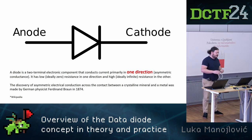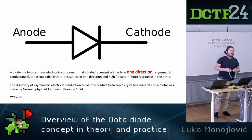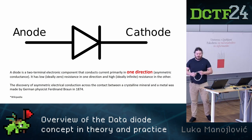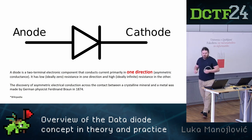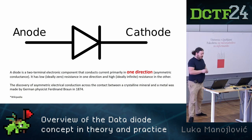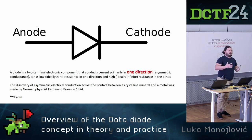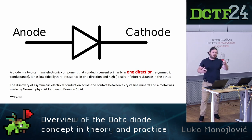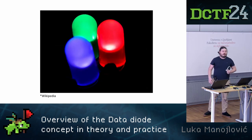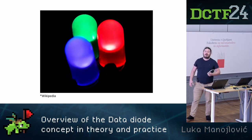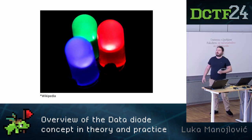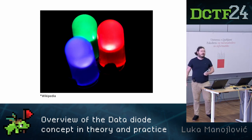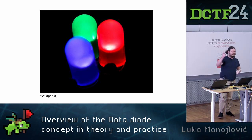First, about diodes. It is quite old technology — the concept was developed in 1874. The idea is of one direction. You probably use diodes all over the place — probably light emitting diodes. That needed another almost 100 years to get the blue one, because the blue one is very difficult to make. Green and red were invented, I think in the 50s, but to get to a blue one it took another 30 years.